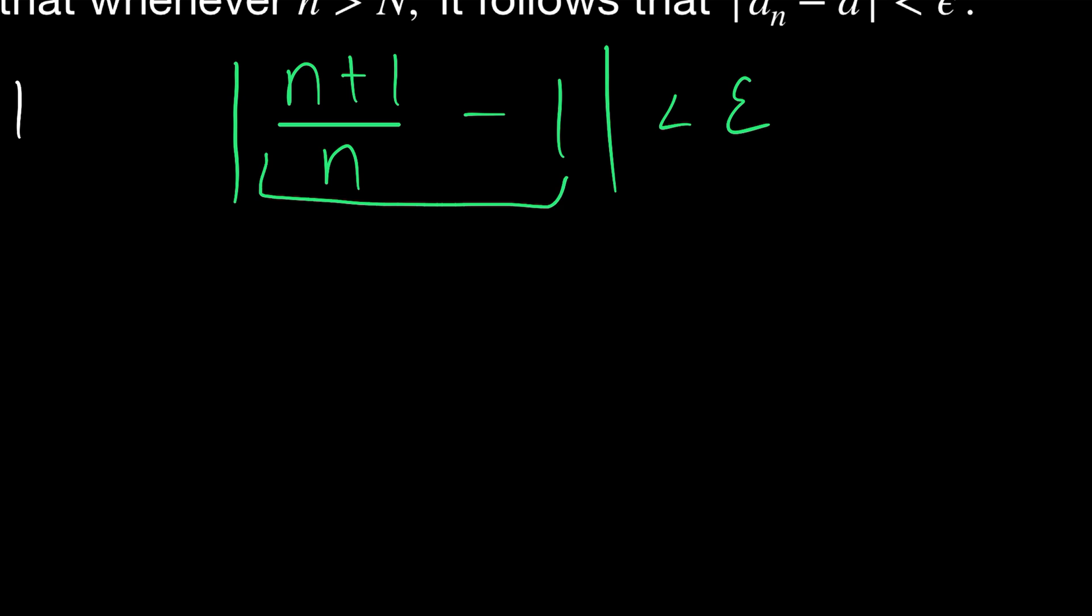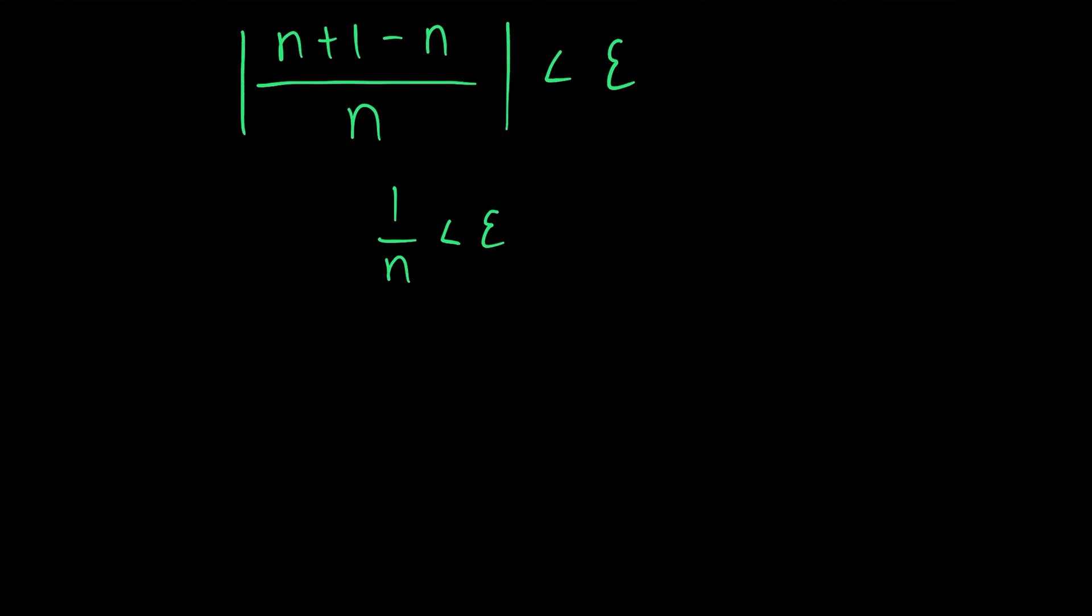To solve for n, we may start by simplifying what's inside these absolute value bars. Let's bring the minus 1 into this fraction. So that's going to be n plus 1, bringing the minus 1 into this fraction is going to turn that into a minus n, and then this is all over n, and the absolute value of this is less than epsilon. Then, of course, we have n minus n, and so those are going to cancel out, which in the absolute value bars is going to leave 1 over n, but 1 over n is always positive, so we can just drop the absolute value bars. So, 1 over n is less than epsilon, and then we can multiply both sides of this inequality by n and divide both sides by epsilon to give us that 1 over epsilon is less than n, which we might rewrite in the opposite order because that looks nicer. n is greater than 1 over epsilon.